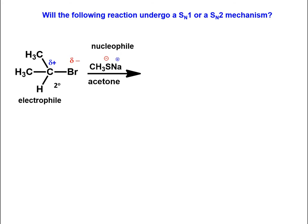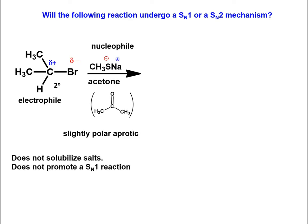The solvent is acetone. It is slightly polar and is aprotic, meaning that it does not have a hydrogen bonded to an electronegative atom and it will not solubilize cations and anions well. It increases the activation energy for forming a carbocation intermediate.